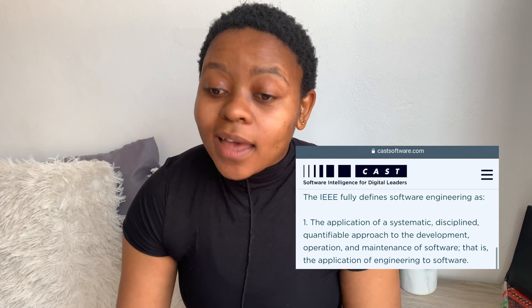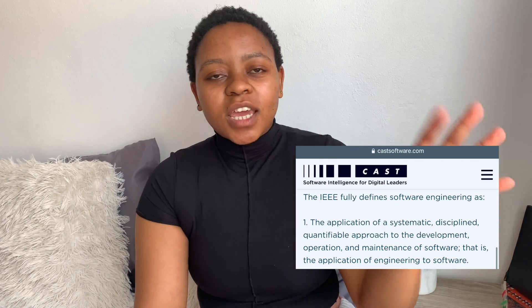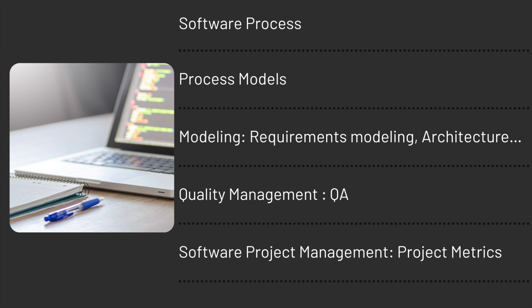At UJ where I studied, third year informatics was all about software engineering — building a system. So you have your software process models, your modeling which covers requirements, architecture, and component designs (your diagrams), then quality management which is your testing, and software project management which involves your estimations and project metrics.